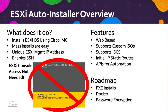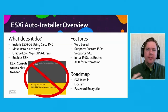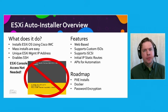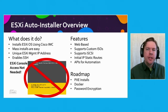I'd like to introduce the ESXi Auto Installer. It's going to install your operating system, make mass deploys really easy, set a unique IP address per host, and it will enable SSH — all without you ever having to see that yellow ESXi console screen again. Specifically, we don't do a lot of configuration of the ESXi host here, because you already have tools to manage and configure your hosts. We're not trying to replace those tools; we're trying to enable them.